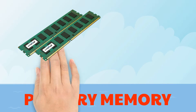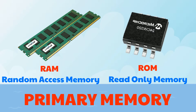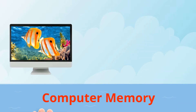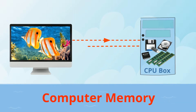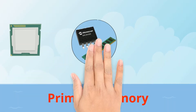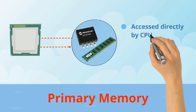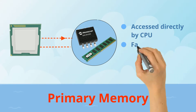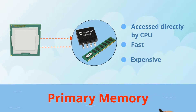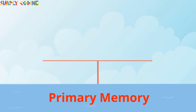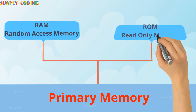Hello, in this video we are going to learn about main or primary memories. Computer memory is any kind of hardware which stores data and instructions for the computer. The primary memory is accessed directly by the CPU. It is fast and more expensive than secondary memory. It is of two types: RAM and ROM.